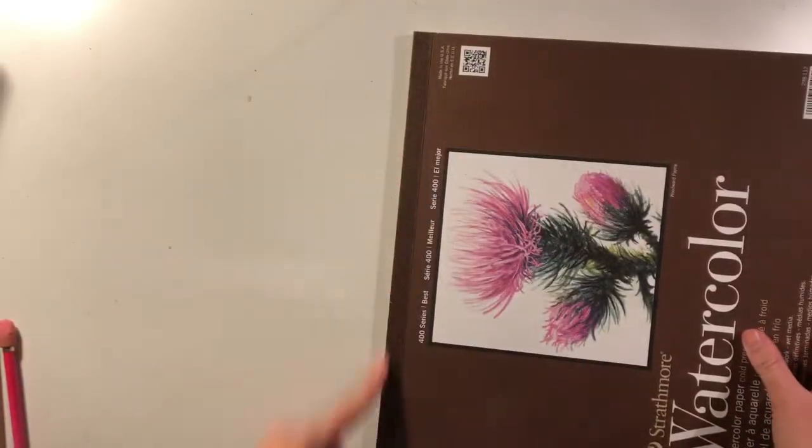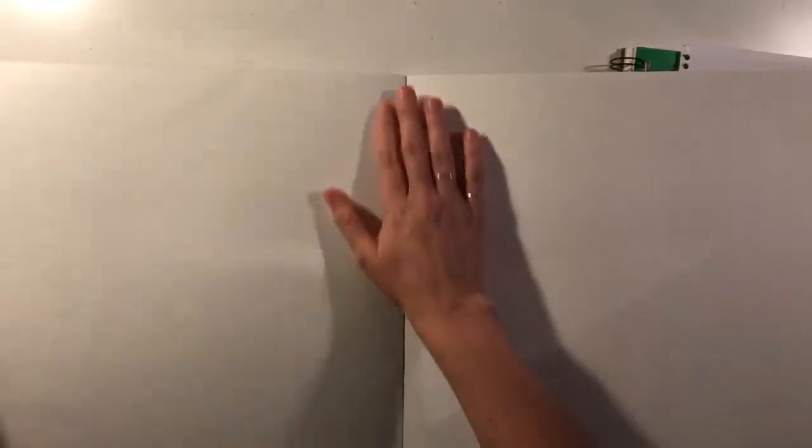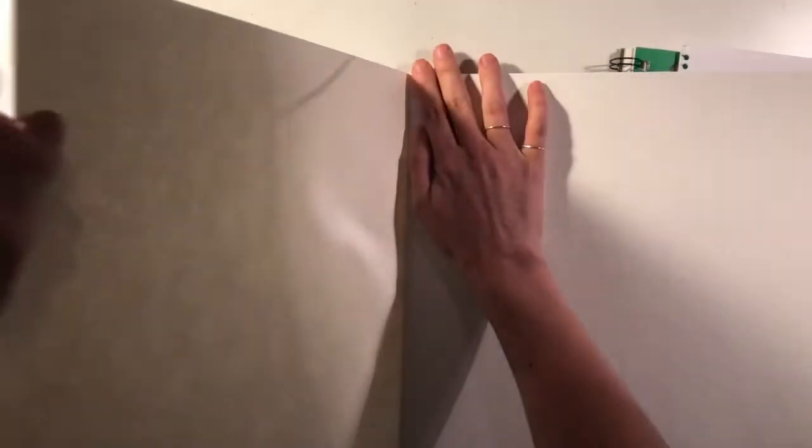If you have a sketchbook that has a gummed hinge here, very carefully you may have to fold the paper back along and then very gently pull those pages out one at a time until you get 30 pages ripped out.